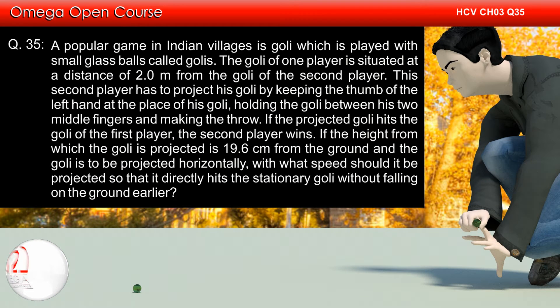A popular game in Indian villages is goalie which is played with small glass balls called goalies. The goalie of a player is situated at a distance of 2m from the goalie of the second player. This second player has to project his goalie, holding the goalie between his two middle fingers and making the throw.